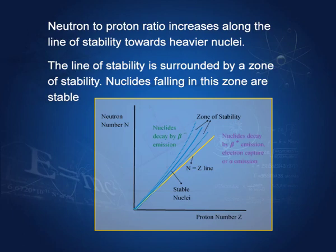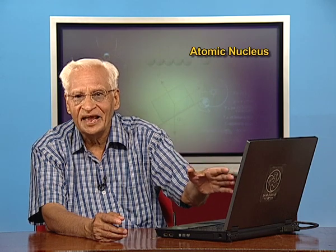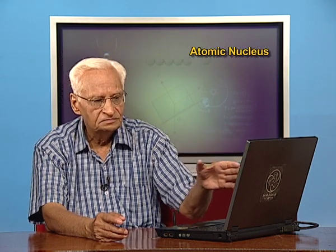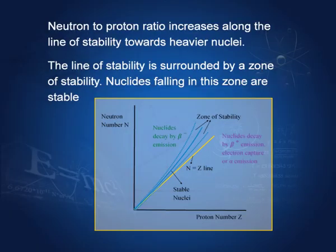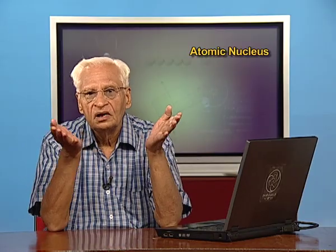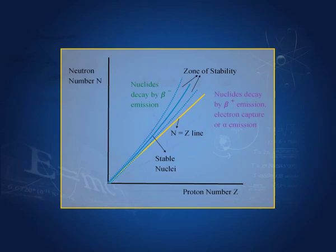On one side of the zone there are more protons than neutrons, and on the other side there are more neutrons than protons. Where there are more protons, they must decay to become neutrons — meaning they must emit positrons, or beta-positive particles. On the other side, nuclei must emit electrons or beta-negative particles, so that neutrons are converted into protons and the nuclei migrate towards the zone of stability.